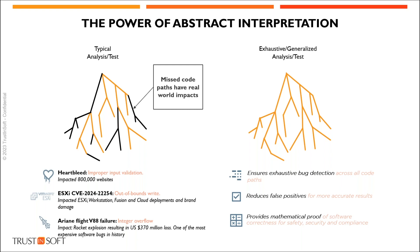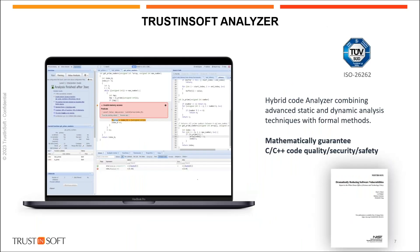Abstract interpretation is a software analysis technique that analyzes the possible values of variables at any stage of the computation. It creates a simplified mathematical model to find all potential problems in your software. This is exactly where TrustInSoft's expertise lies — we use formal methods and especially abstract interpretation.